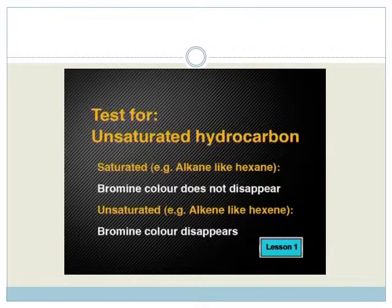We have a useful test for unsaturated hydrocarbons, whether they are alkenes or other types of molecules. When bromine is mixed with an unsaturated compound, bromine's color quickly disappears.